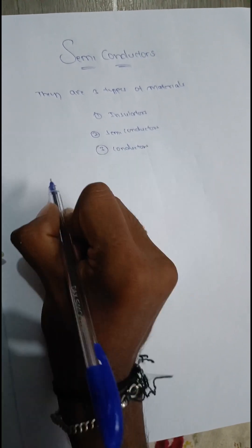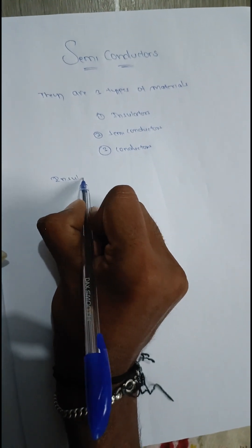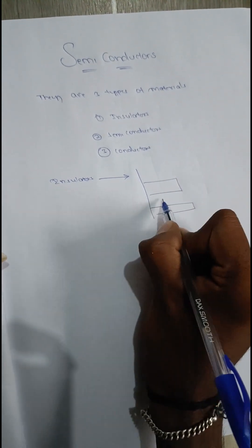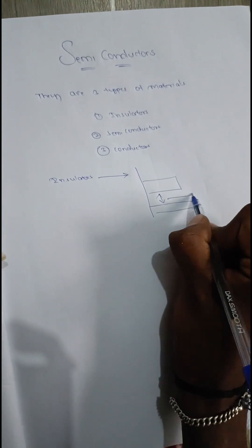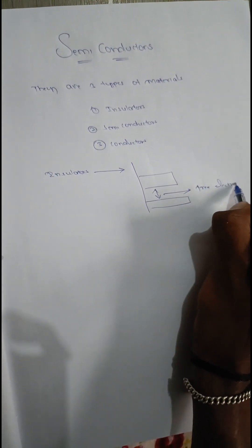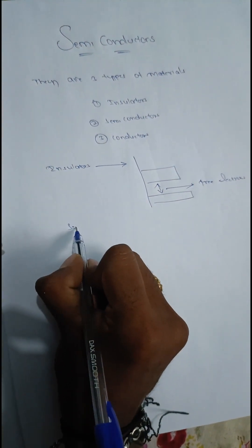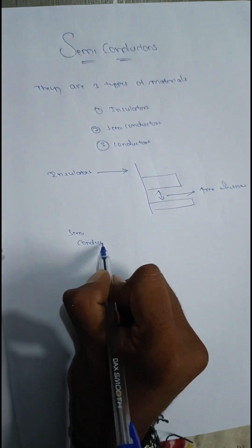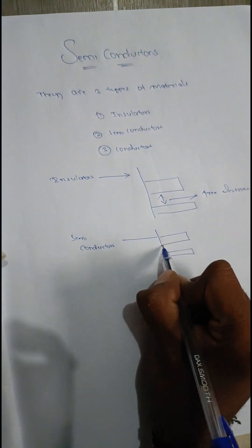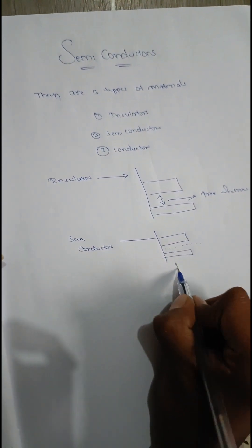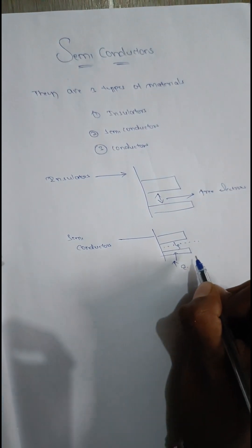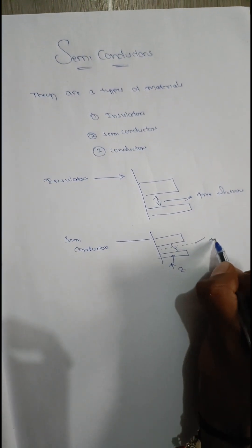What is meant by insulators? In insulators, there is a large gap between the valence band and conduction band. In semiconductors, there is a small gap between valence band and conduction band. Using external energy, we can flow the electrons between the conduction band and valence band.